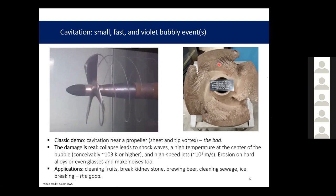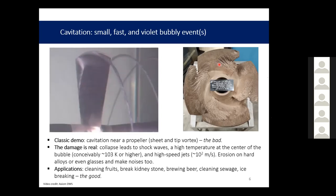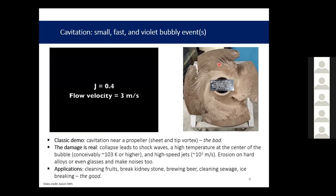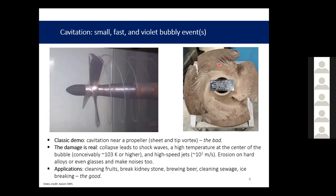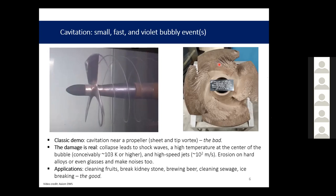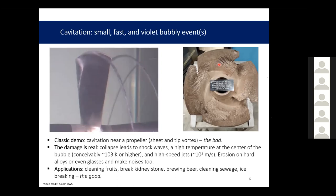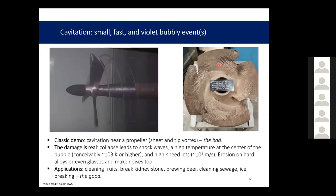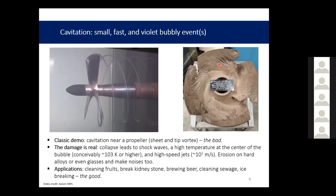When the cavitation bubble expands and collapses, it leads to shock waves, very high temperature at the center of the bubble, and very high-speed jets. The erosion can destroy hard alloys, glasses, and ceramics. On the other side, we can actually use this damage: we can use cavitation to clean fruits without chemicals, break kidney stones, brew beer, clean sewage. Some people also propose using large cavitation bubbles to break ice. So there's also a good side to cavitation.